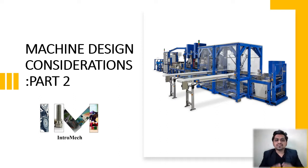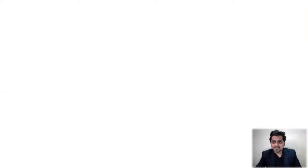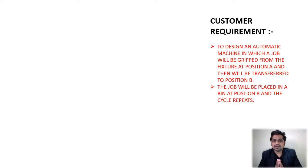In the last session, we saw some of the parameters, so let's see what are the remaining parameters. Just a quick recap: we have designed a machine from the customer requirement that we want an automatic machine in which a job will be gripped from one place to another place and then it will be placed at location B in some bin and the cycle repeats.